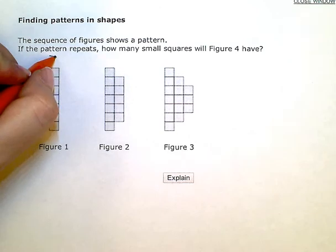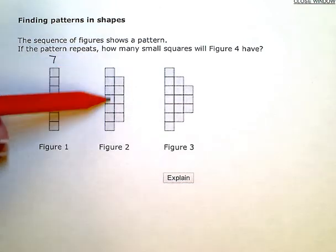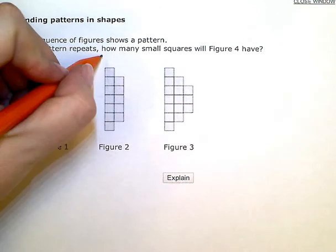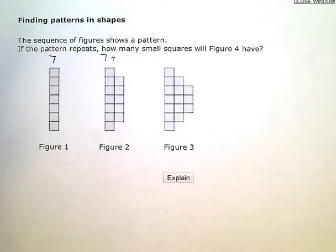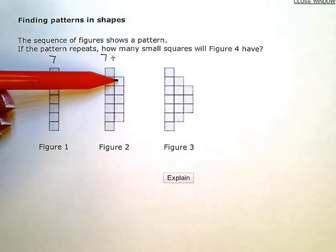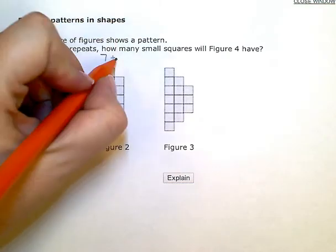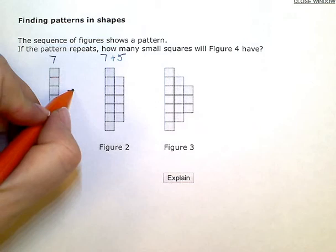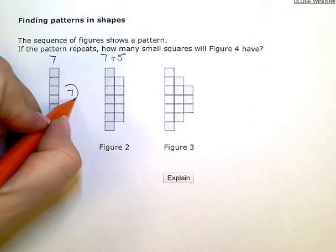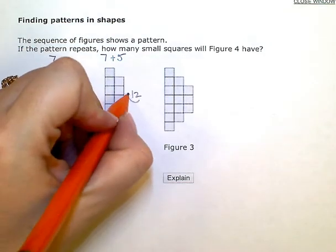In figure 2, I have those same 7 squares, but I'm adding on 1, 2, 3, 4, 5 in my second row. So this one had a total of 7, and this one has a total of 12.